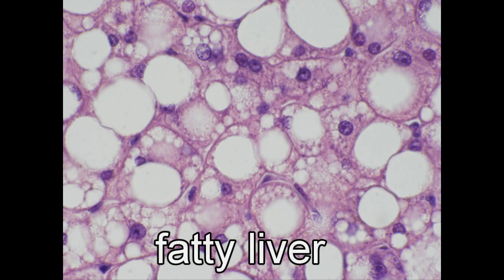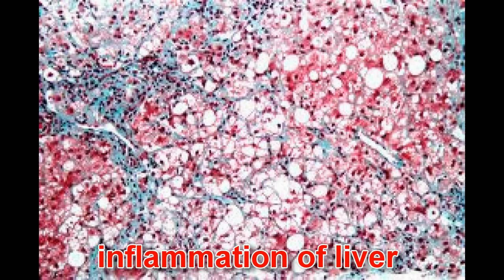Fatty liver refers to a group of conditions in which there is an excessive accumulation of fat in the liver. In fatty liver, fat accumulates in the liver cell despite absence of alcohol consumption. In some patients, fatty liver is associated with inflammation and scarring of the liver, leading to cirrhosis. Fatty liver is a very common condition, affecting up to 20% of adult population.